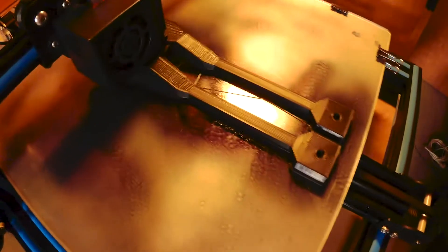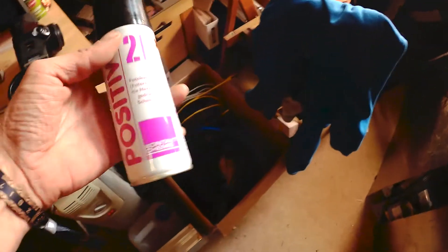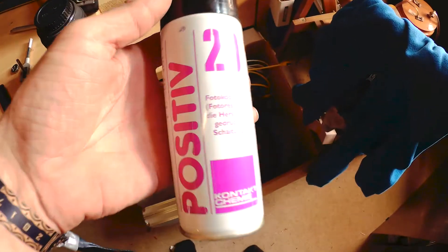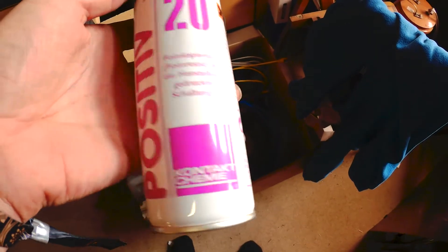The print looks pretty fine. And as you can see, this brownish reddish stuff here on the glass plate is electronic lacquer to develop electronic circuit boards.